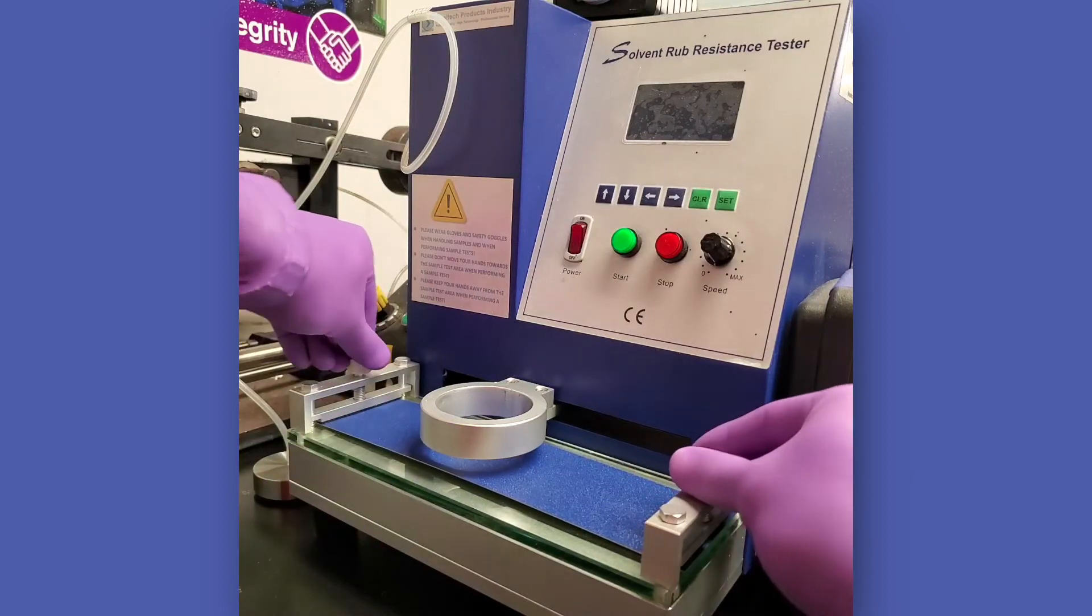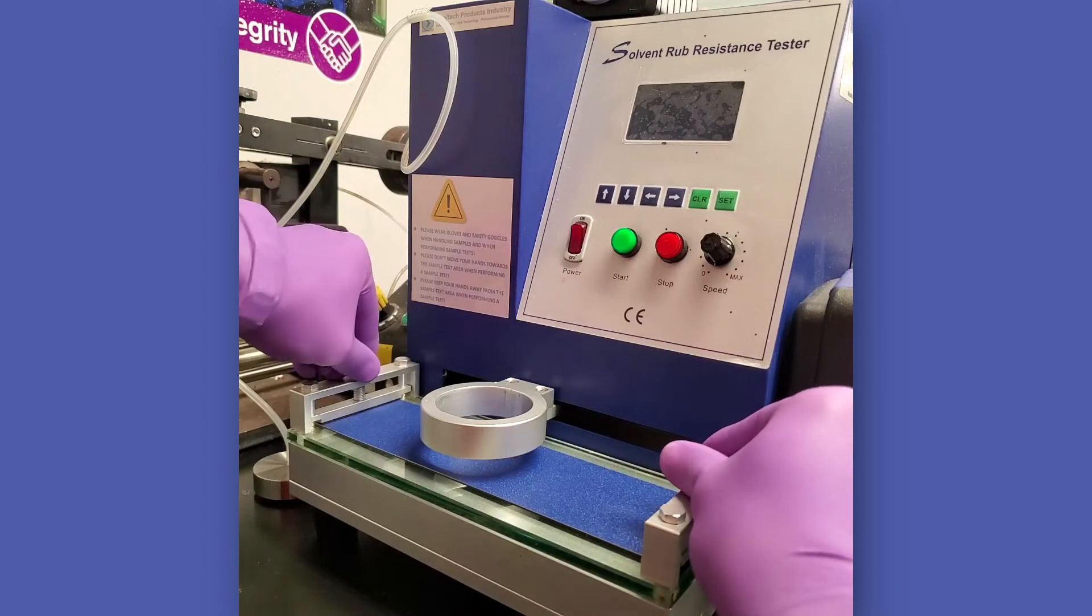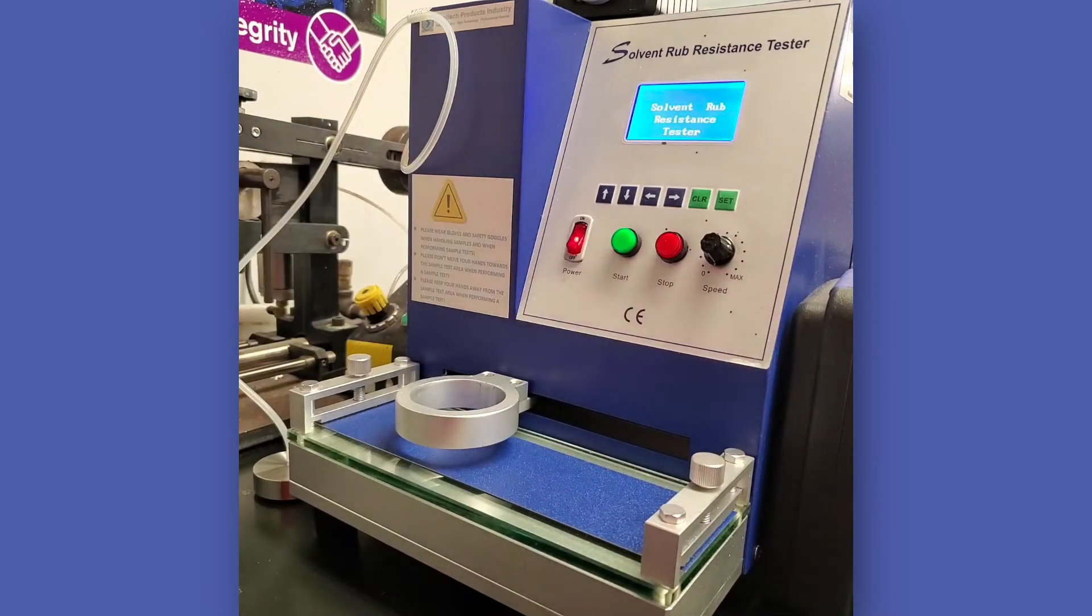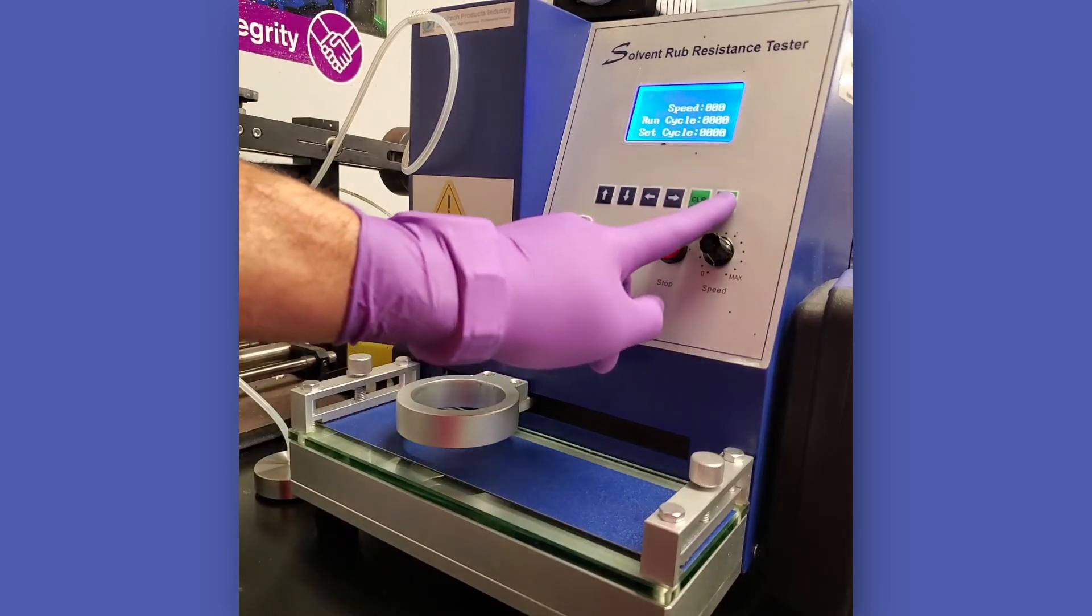Clamp the panel to be tested into position with the long dimension parallel to both the rubbing direction of the machine and the rolling direction for coil coatings in accordance with the machine manufacturer's recommendations. Set the machine counter to the desired number of rubs.